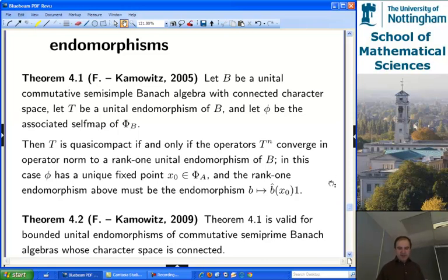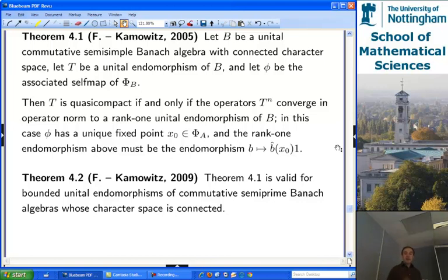So let me just move on to tell you what are the results we've got then, in a completely general setting. So you've got your associated self-map, and so on then. So here's the one I mentioned earlier. You're quasi-compact, if and only if the operators T to the N converge in operator norm to a rank one unital endomorphism, and the rank one unital endomorphism, of course, corresponds to the unique fixed point of your self-map. And then it works again, because what you really, the most important thing you needed was the powers of eigenvalues were still eigenvalues, and a few other little fiddly tricks, and then you find it works for commutative semi-prime Banach algebras as well, as long as the character space is connected.